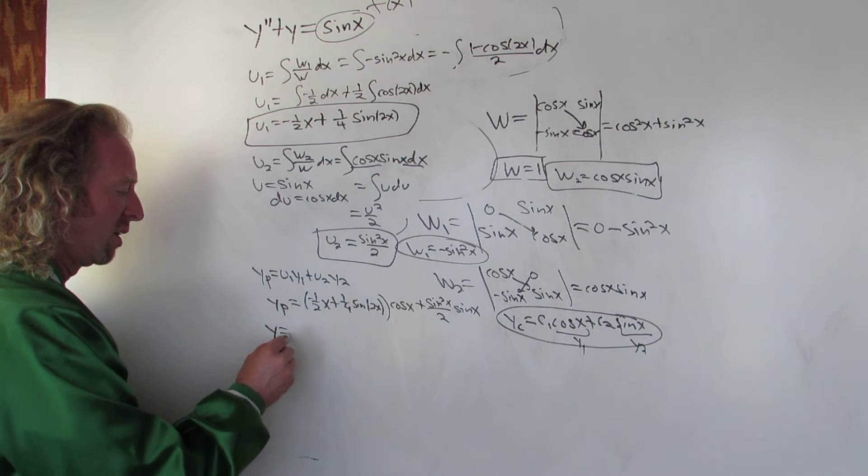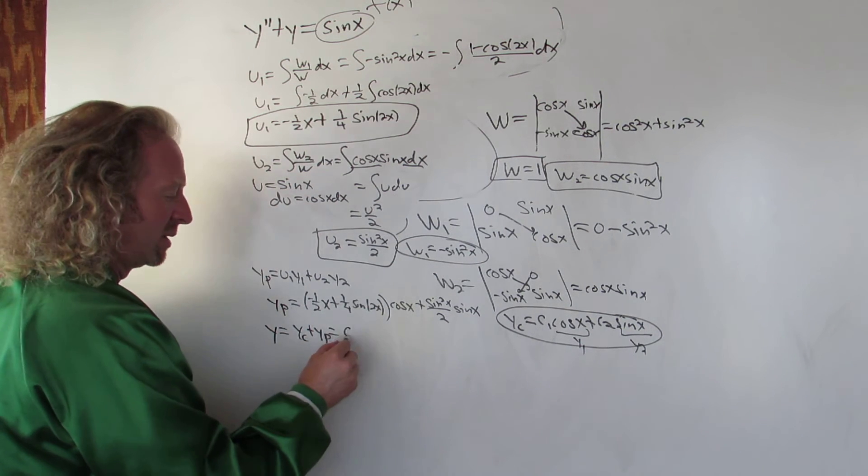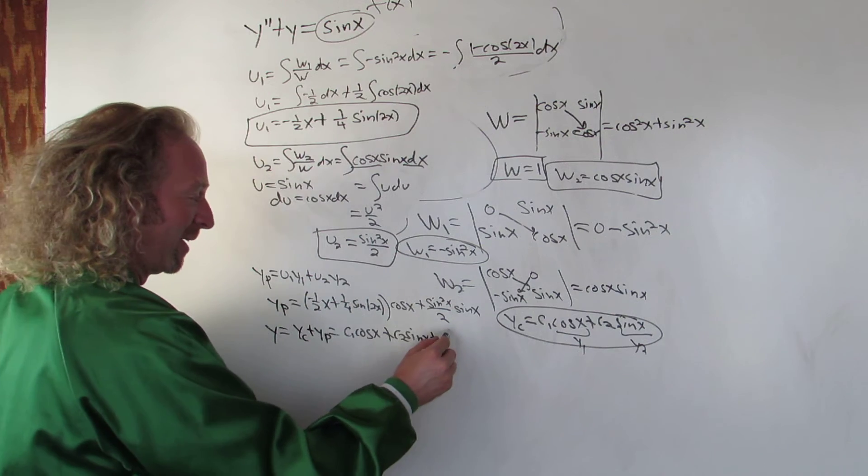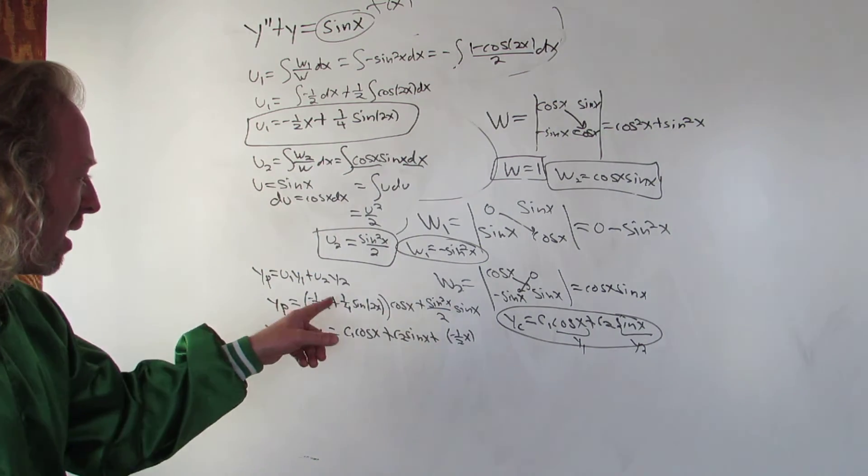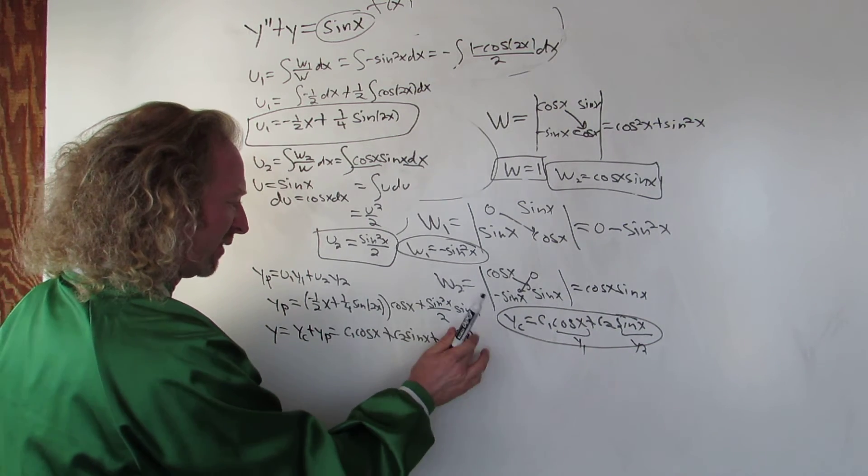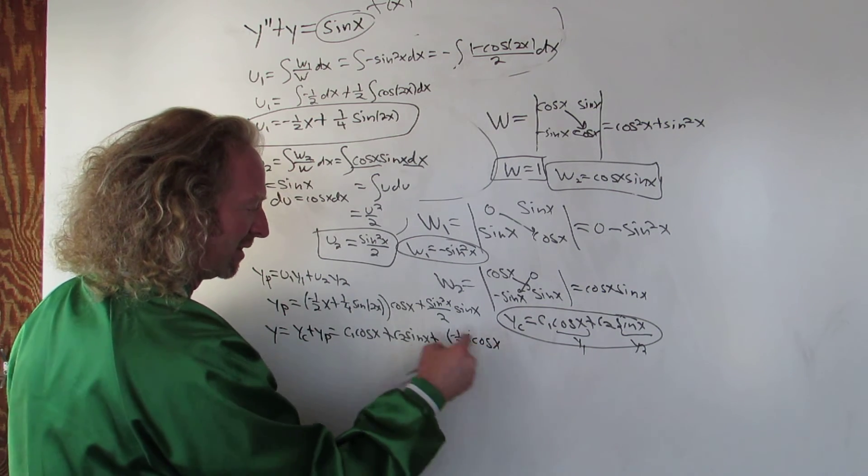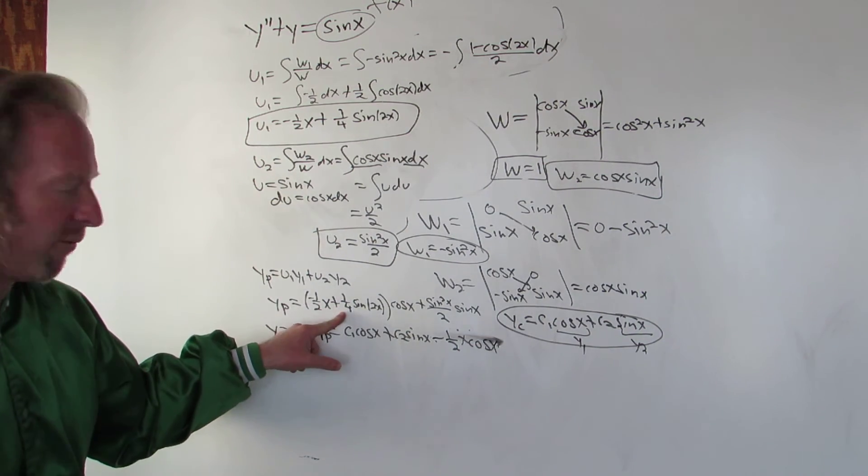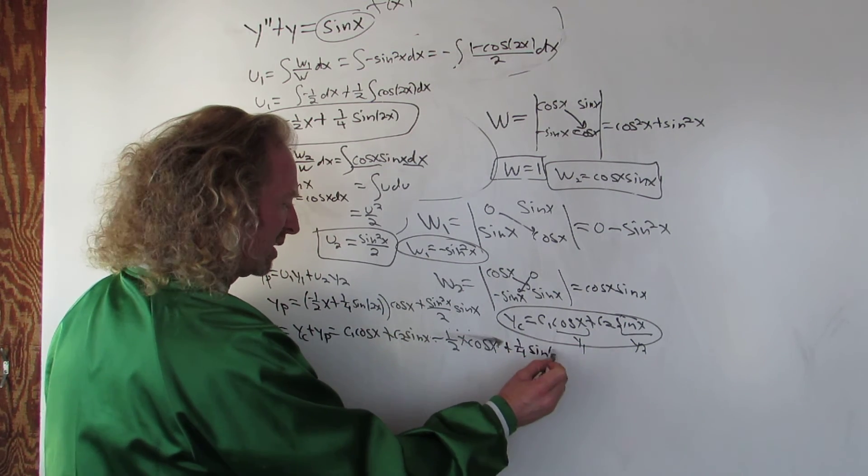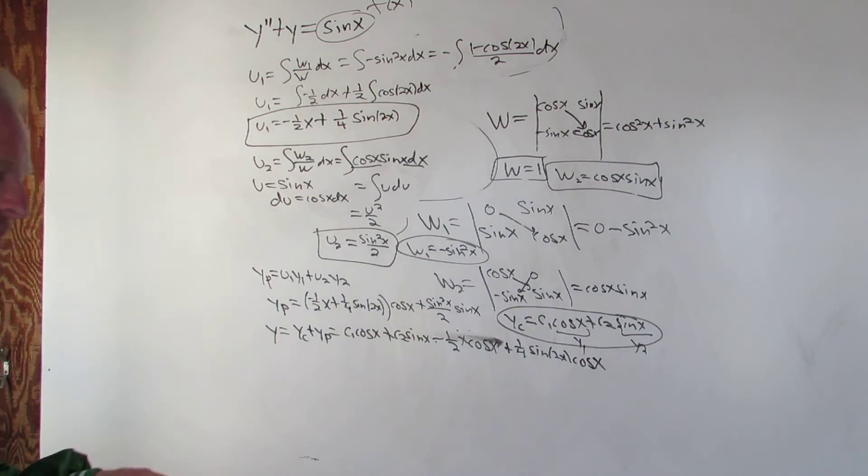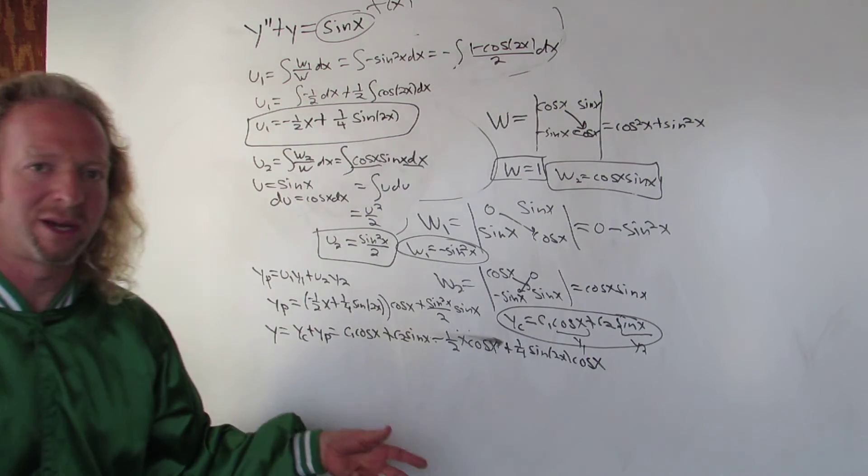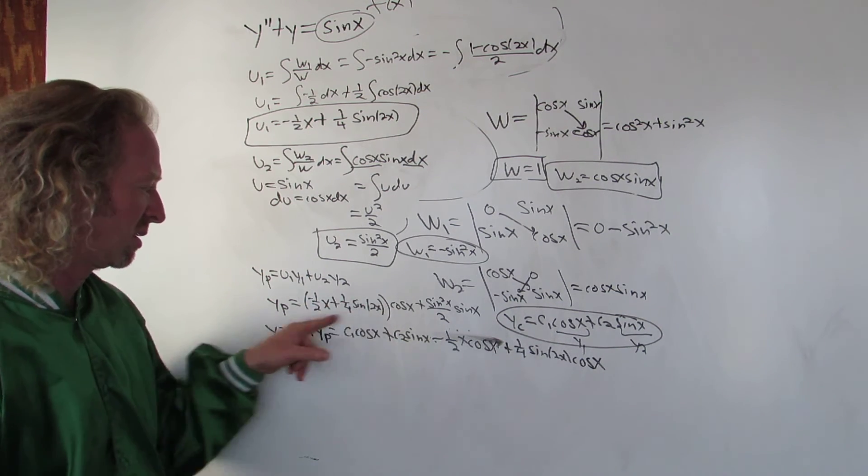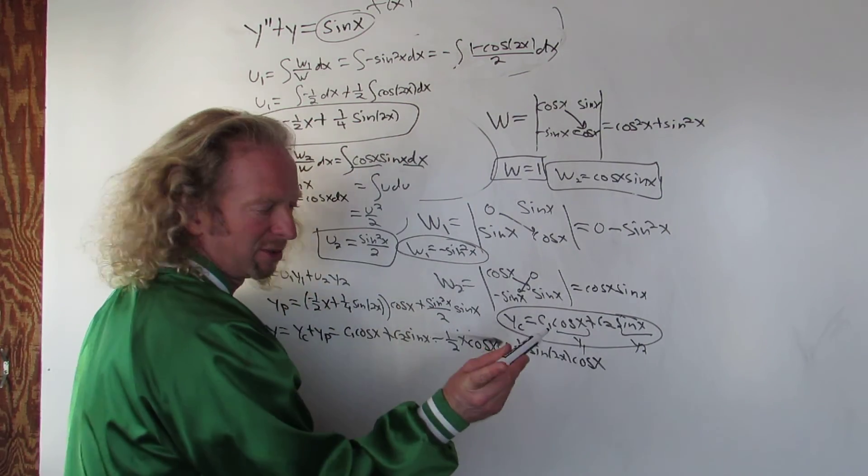The final answer is yc plus yp. So our final answer is y, which is yc plus yp. So yc is c1 cosine x plus c2 sine x, and then yp is here. Negative 1 half x cosine x, and then 1 fourth sine 2x cosine x. A lot of times you can use a lot of identities here to rewrite the answer. So if you're doing homework and you're looking in the back of a book or something and say, oh my god, my answer is different. Identities. There's all kinds of ways to rewrite solutions here. This times this is sine cubed x.